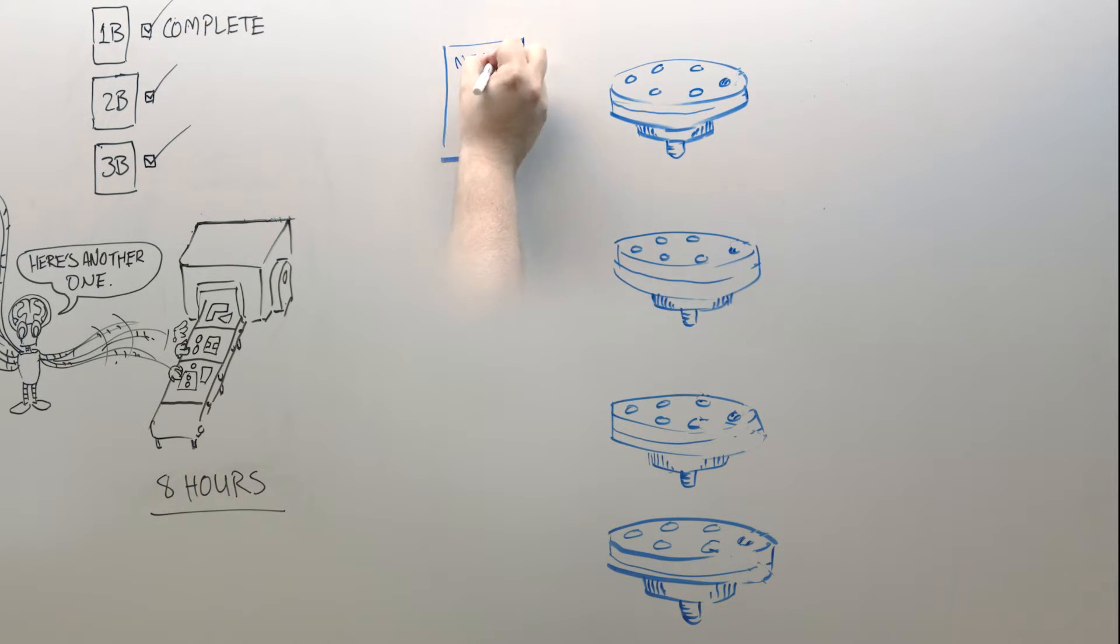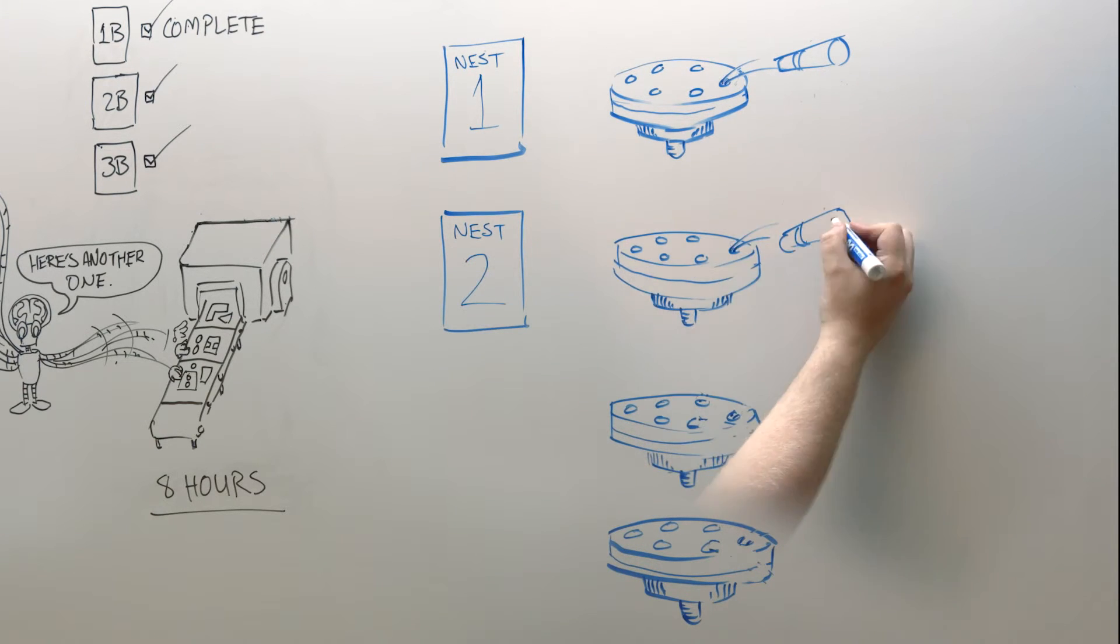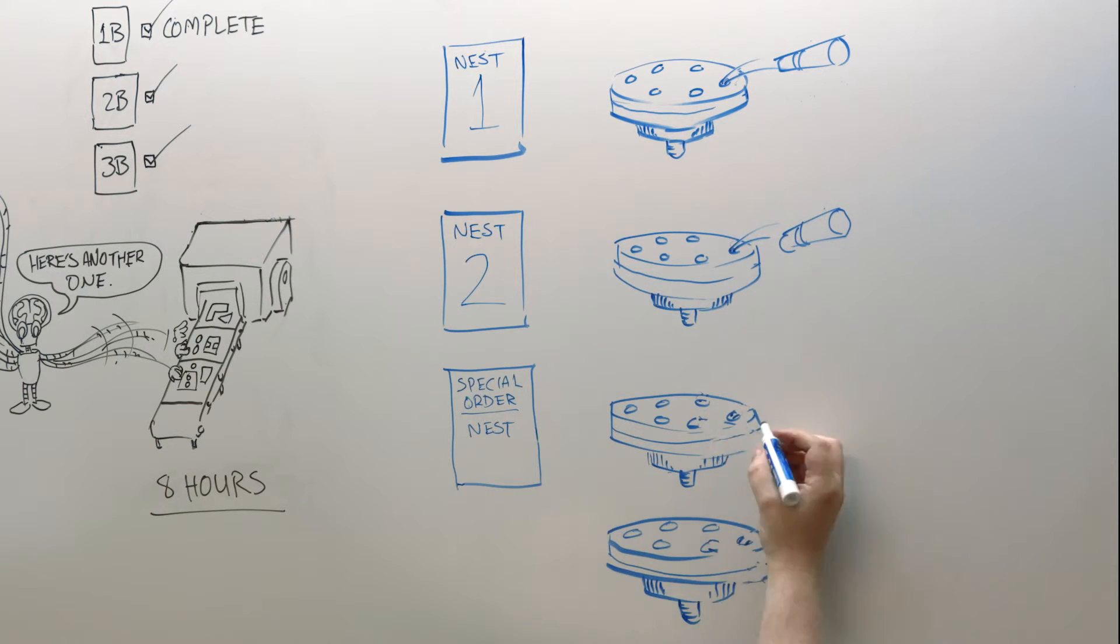With our just-in-time nesting system, every nest is planned based off the current machine setup state, regardless of changes or problems. You always have the most efficient setup possible going from one nest to the next.